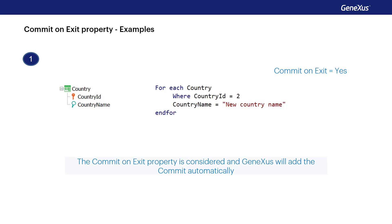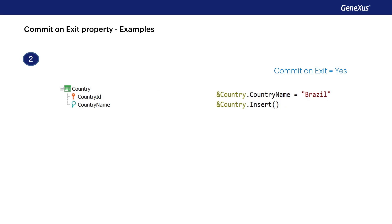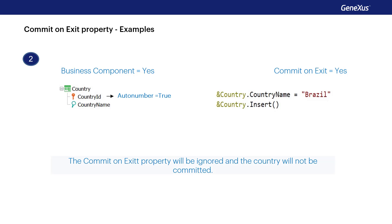In the second example, consider the same Country transaction set as a business component and the source of the procedure shown. The CountryID attribute is auto-numbered and the procedure has the Commit on Exit property set to yes. Since the procedure only performs operations with the business component, even if the procedure has Commit on Exit set to yes it will be ignored and the country will not be committed. To achieve this, it is necessary to add the commit command explicitly.